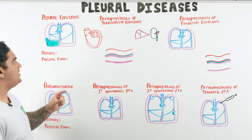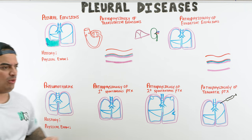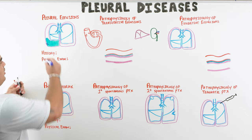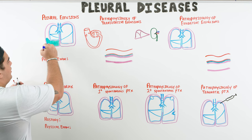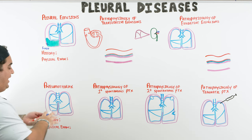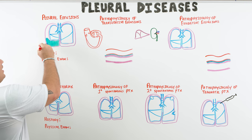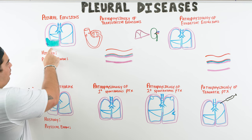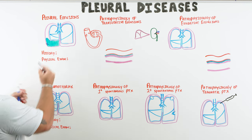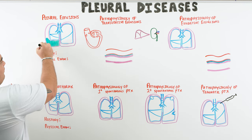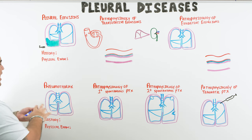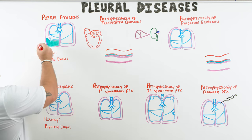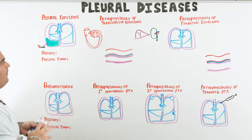There are two pleural diseases you need to recognize: pleural effusions and pneumothorax. With a pleural effusion, the problem is fluid — there's an increased amount of fluid present inside the pleural space, which is the space between the parietal and the visceral pleura.